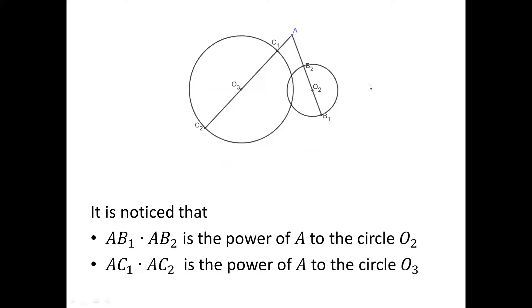In this problem, we notice that AB1 · AB2 is the power of A to the circle with center O2, and AC1 · AC2 is the power of A to a different circle with center O3.